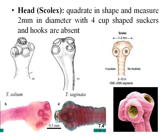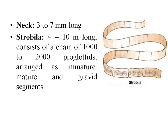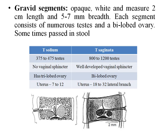The adult worm of T. saginata is white, ribbon-like, flattened, and segmented, measuring around 4–10 meters, with a scolex, neck, and strobila. The scolex is quadrate in shape, measures around 2 millimeters in diameter with 4 cup-shaped suckers, and hooks are absent. The neck is 3–7 millimeters long. The strobila measures 4–10 meters and consists of 1,000–2,000 proglottids arranged as immature, mature, and gravid. Gravid segments are opaque white, measure around 2 centimeters in length and 5–7 millimeters in breadth, each containing numerous testes and a bilobed ovary.